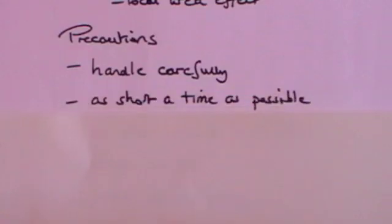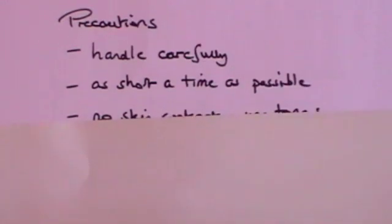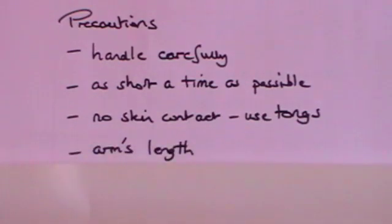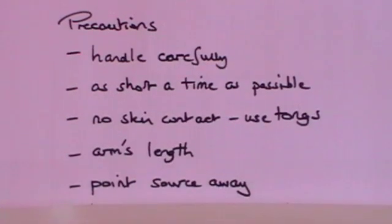So you need to take precautions when you use radioactive material. Handle them carefully, for as short a time as possible, and never have any skin contact. Always make sure you use something like tongs. Hold them at arm's length so that the radiation is furthest away from the rest of your body. If there is a source, you must point it away from you, so that it's not pointing the rays in your direction.